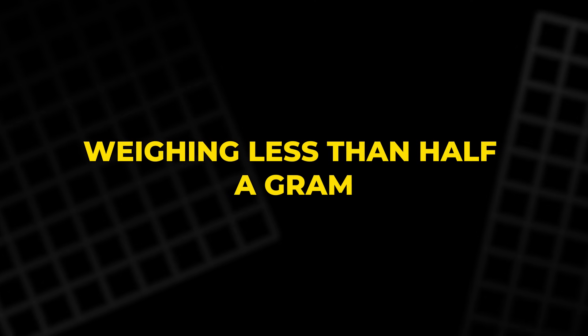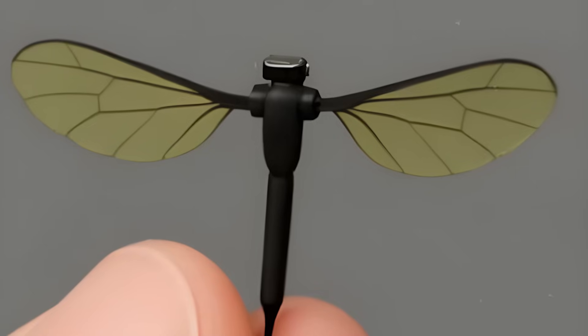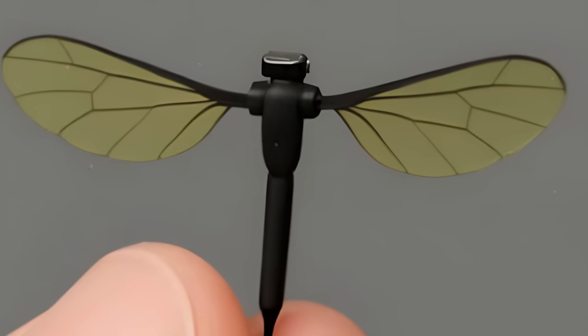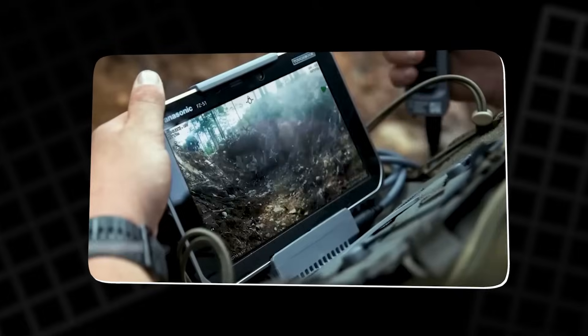Weighing less than half a gram, it's almost impossible to detect by the human eye. Its matte exterior helps the drone blend seamlessly into its environment, while its infrared signature is so faint that it barely stands out in thermal imaging.